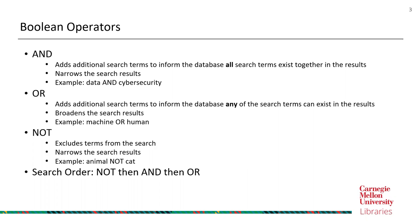The next operator is NOT. As the word indicates, it excludes terms from the search. This is helpful when you don't want certain keywords to appear — you can use the NOT operator to exclude those keywords from the search results. It narrows results. For example, 'animal NOT cat' means the database will search for animal while excluding cat.